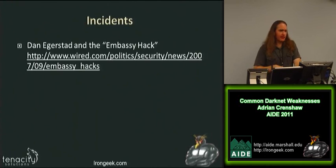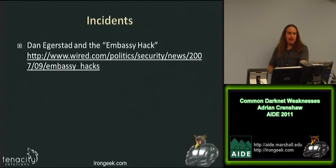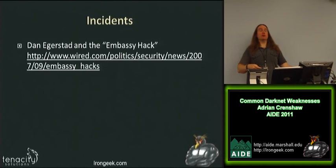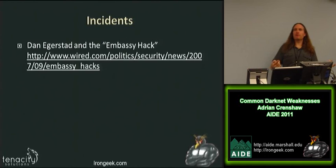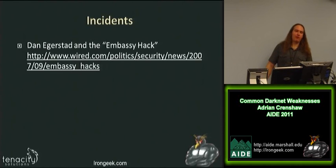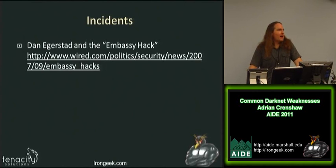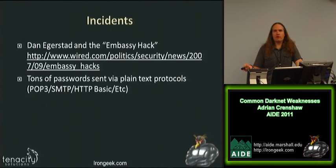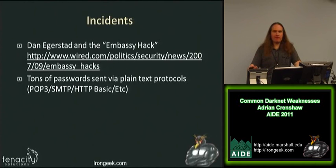There have been actual incidents of this. Dan Egerstadt did something called the embassy hack back in 2007. He set up some TOR exit points, and a bunch of people at embassies were using TOR to avoid the government of the country they were in spying on them — which is true, it gets traffic out of the country. But they were using non-encrypted protocols like POP3 without encryption, so they were sending usernames and passwords in plain text once traffic hit that exit point. Examples of plain text protocols with no encryption by default include POP3, SMTP, and HTTP basic authentication — passwords passed in clear text or an easily reversible format like Base64. Moxie Marlinspike's SSL strip was doing something similar: if you set up an exit point and use it, even though someone is using HTTPS, the tool would redirect them to HTTP.